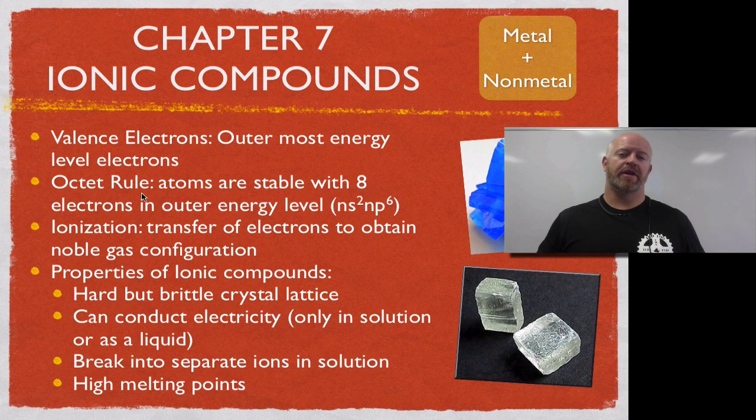When you have the rule for a rule of eight or the octet rule, it's really telling us that to be a stable atom, everything wants to add up to eight valence electrons or eight outer electrons. Most atoms don't have that naturally. Our noble gases do.